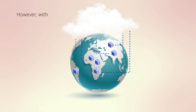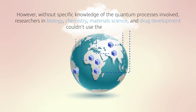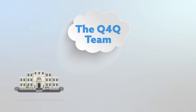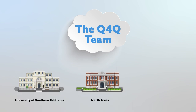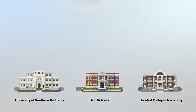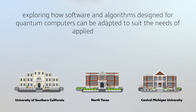However, without specific knowledge of the quantum processes involved, researchers in biology, chemistry, materials science, and drug development couldn't use the technology. Now, the Q4Q team at the University of Southern California, University of North Texas, and Central Michigan University aims to build on these advances, by exploring how software and algorithms designed for quantum computers can be adapted to suit the needs of applied scientists.